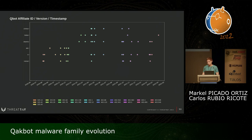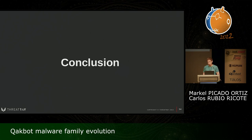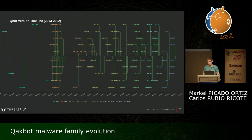Another interesting thing is that they update not only the bot but also sometimes the cryptor in order to avoid antivirus measures and to add new features. In conclusion, in this talk we have been seeing how Qbot has evolved and changed a lot over the years — from an old banking trojan to a more modular malware. It is very active and in continuous development, and for that reason we think it is very important to track. Looking at the timeline, it is possible that in the following months they are going to release a new major version.